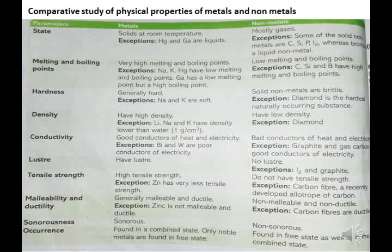Metals have high density. Non-metals have low density. Exception — Lithium (Li), Sodium (Na), Potassium (K) have density lower than water. Conductivity: metals are good conductors of heat and electricity. Non-metals are bad conductors of heat and electricity. Exception — graphite and gas carbon are good conductors of electricity.